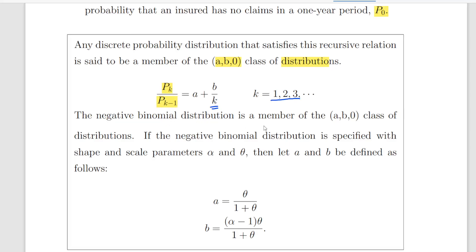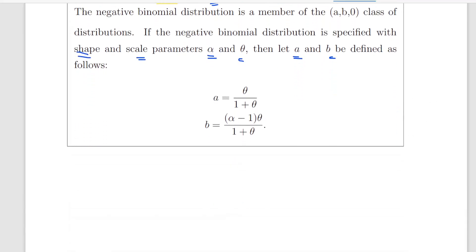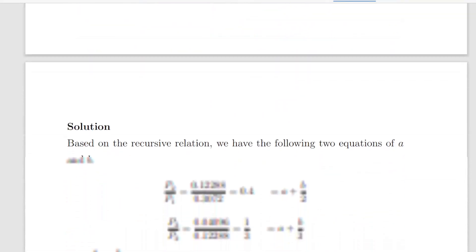The negative binomial distribution is a member of the AB0 class of distributions. If the negative binomial is specified with the shape and scale parameters alpha and theta, then A and B can be defined accordingly. Something we could do in another video is actually find out what A and B are, but we'll cross that bridge when we come to it.